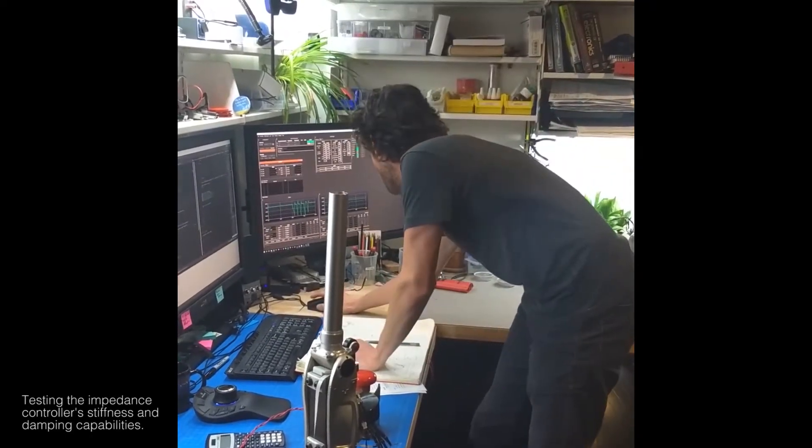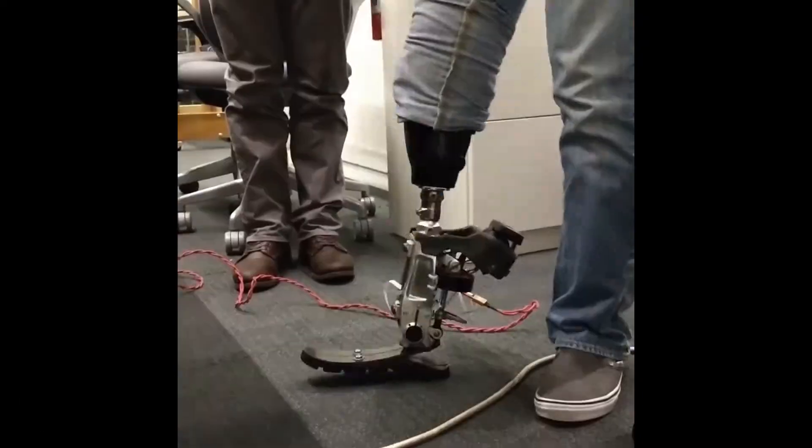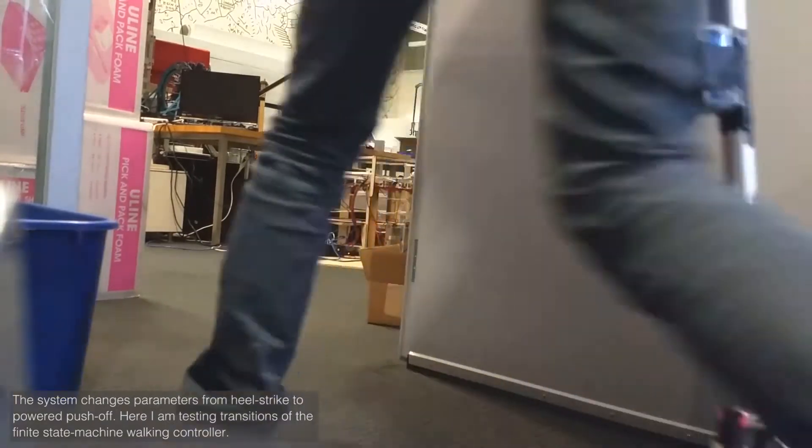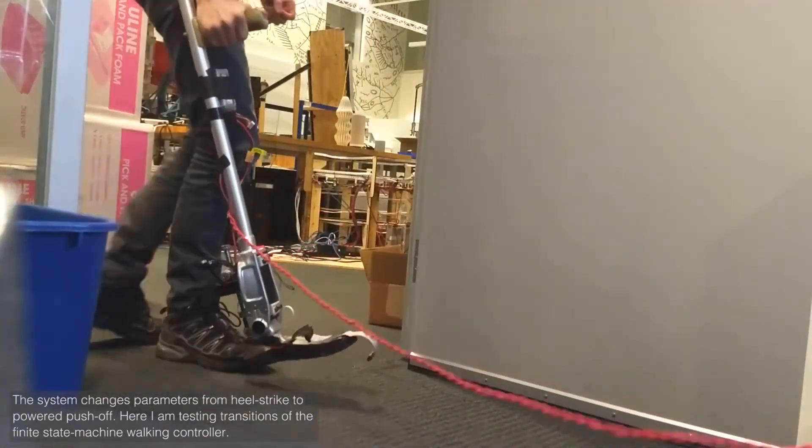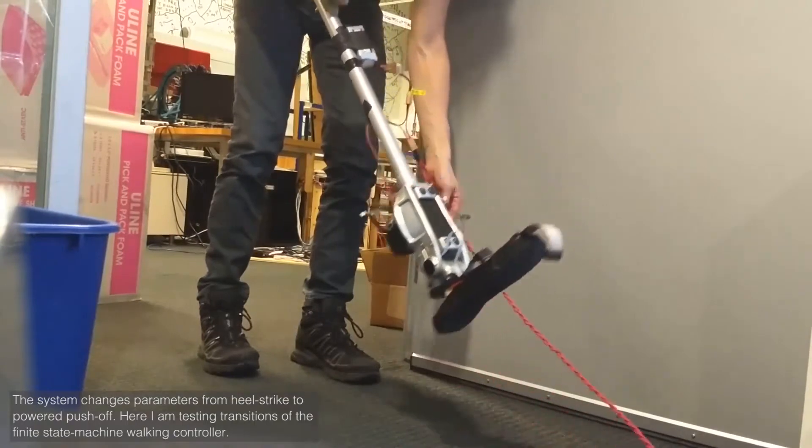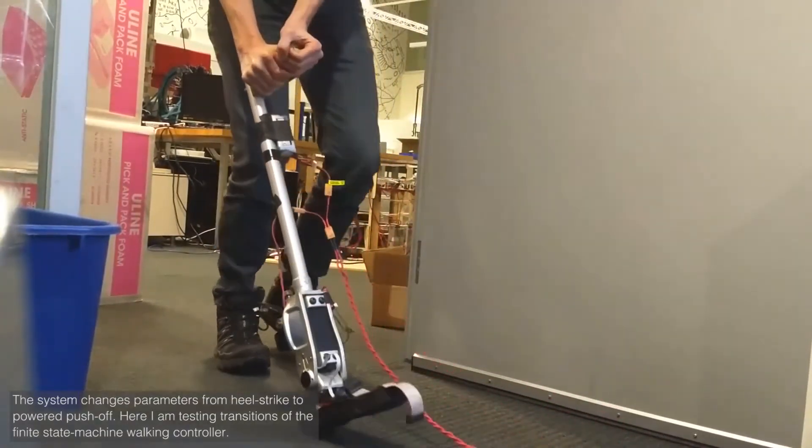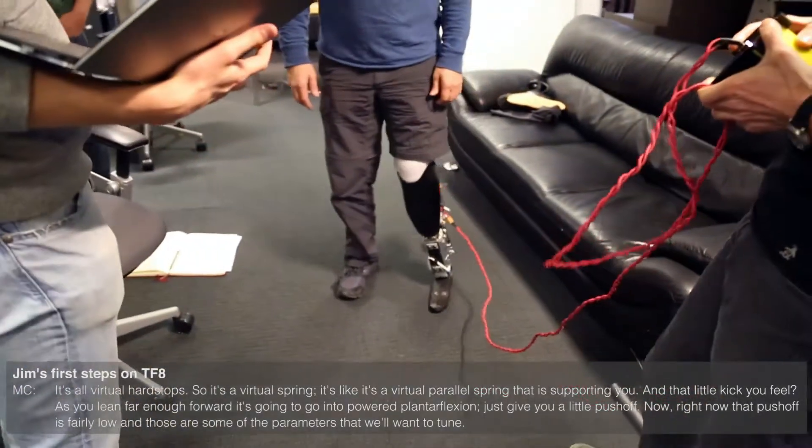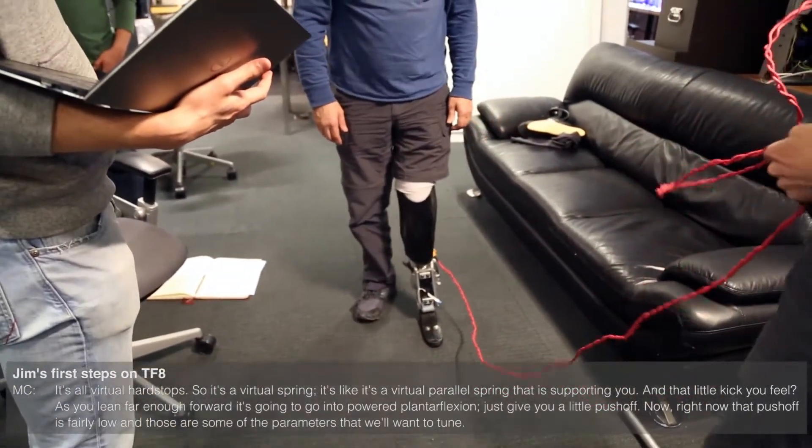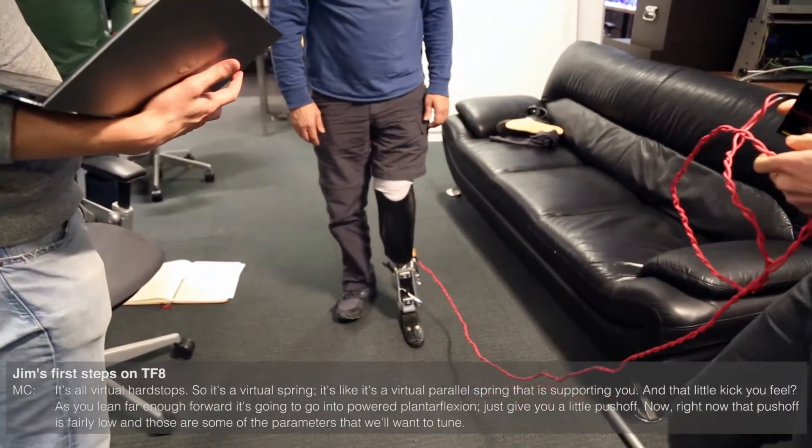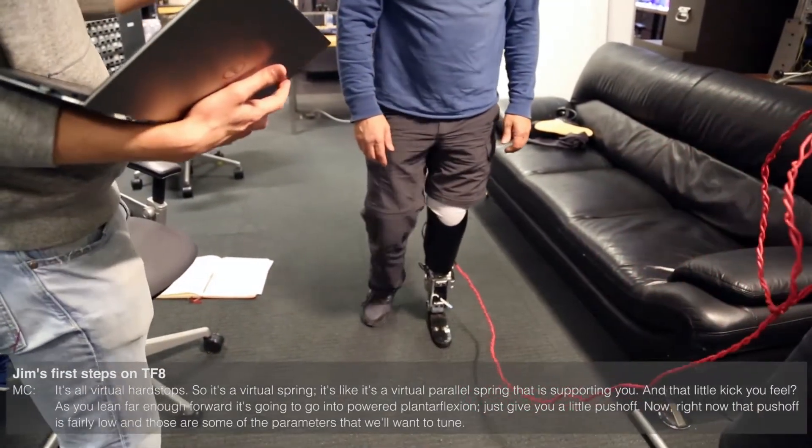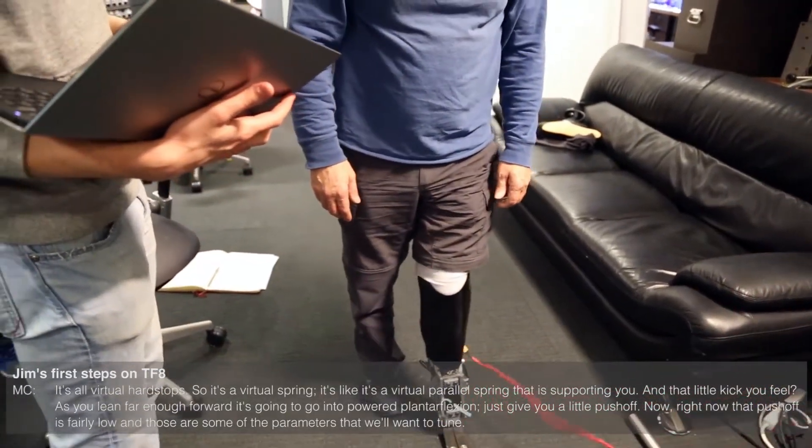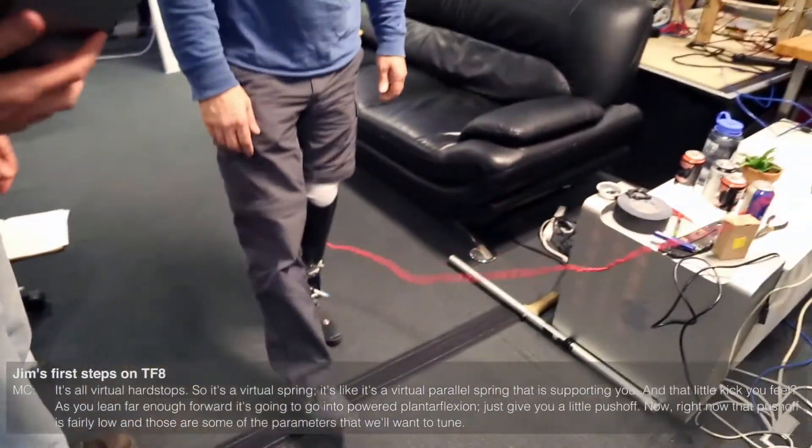I'll do a table for you. It's 30 Newton meters. It's all virtual hard stops, so it's a virtual spring, a virtual parallel spring that is supporting you. That little kick you feel as you lean far enough forward is going into powered plantar flexion. Let's give you a little push-off. Right now that push-off is fairly low, and those are some of the parameters that we'll want to tune.